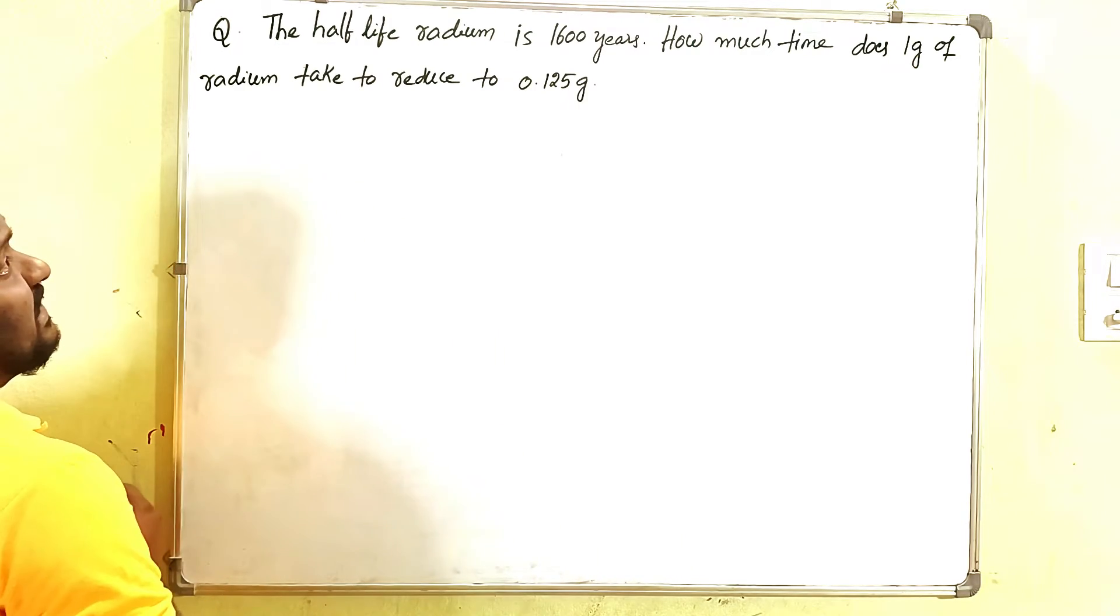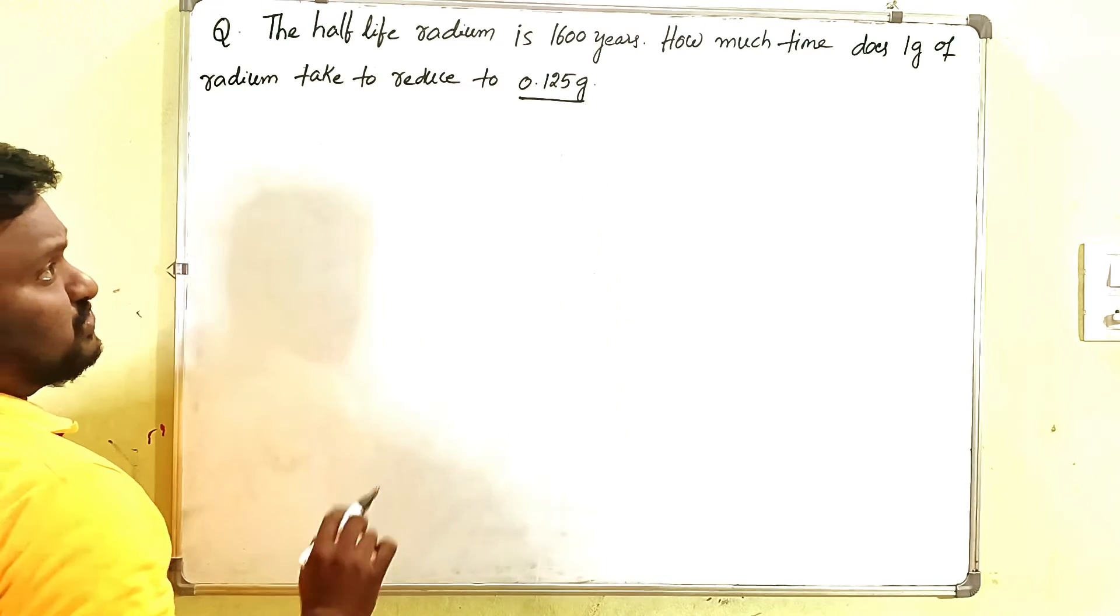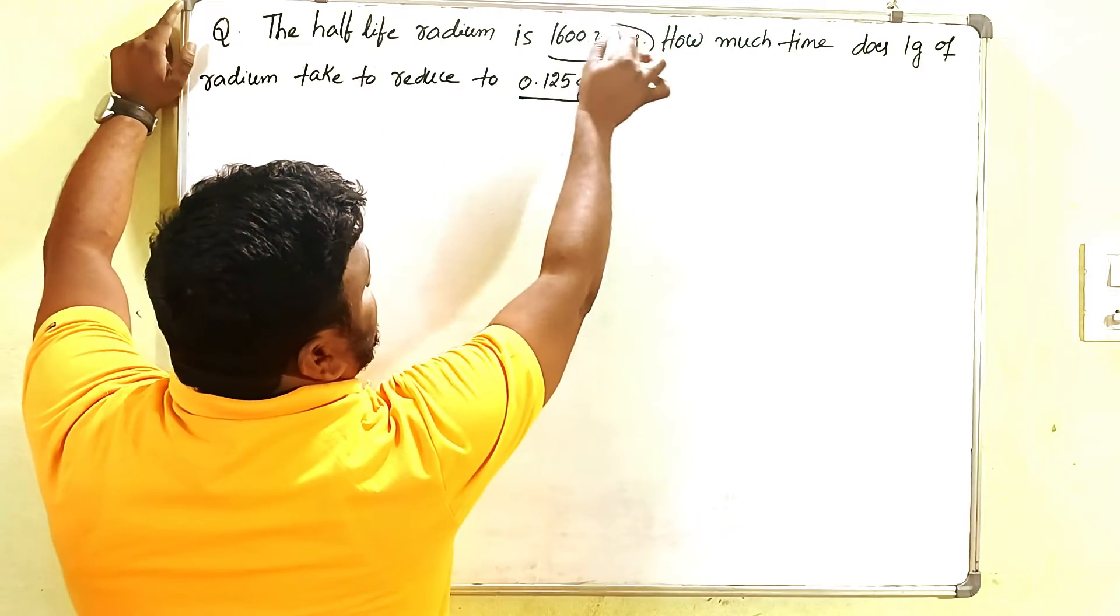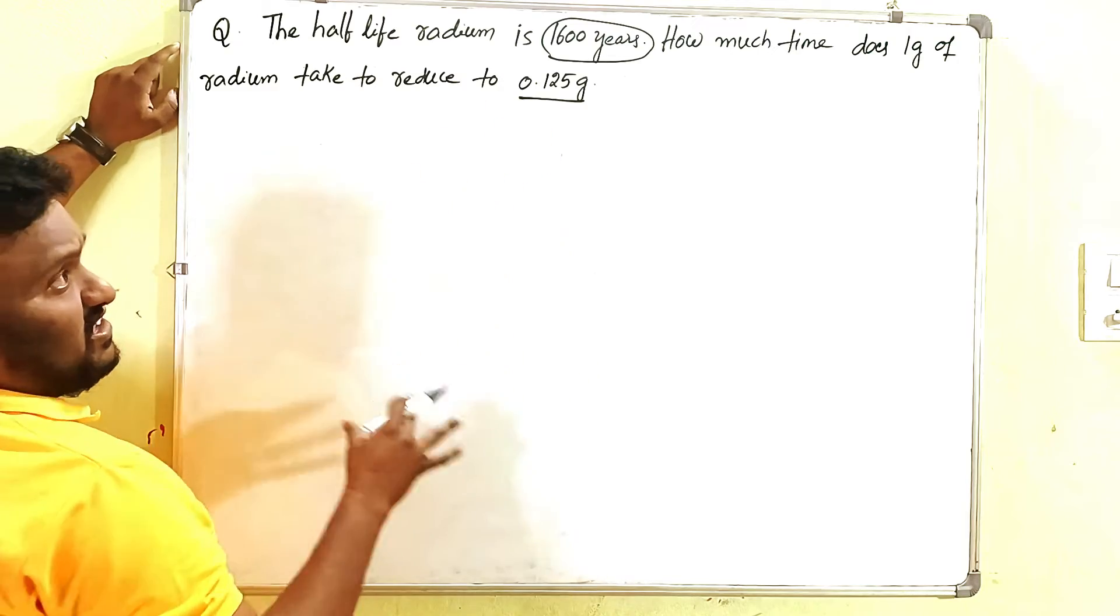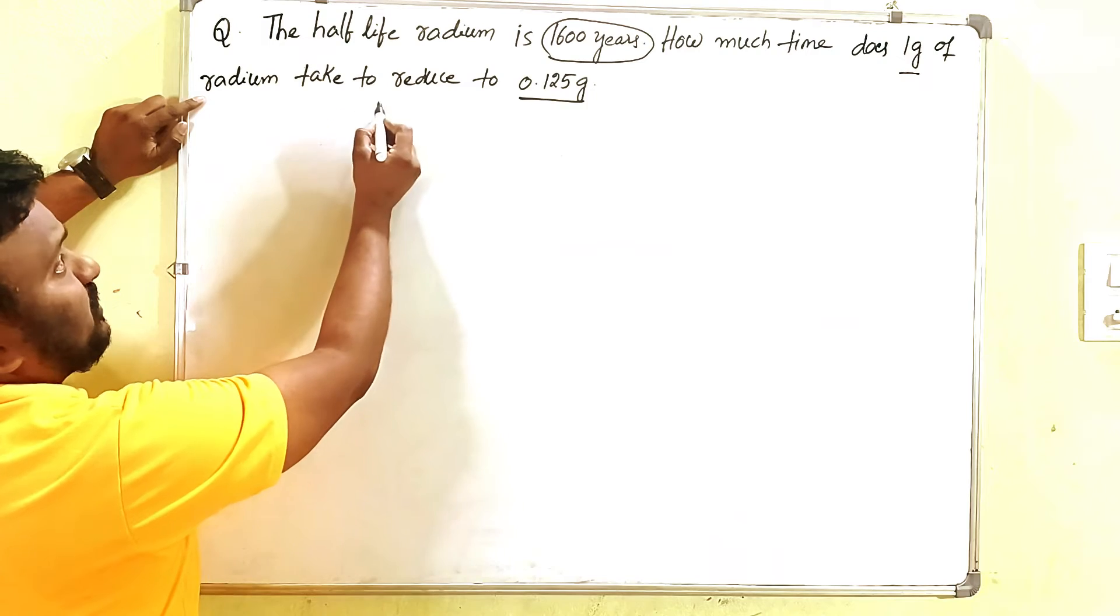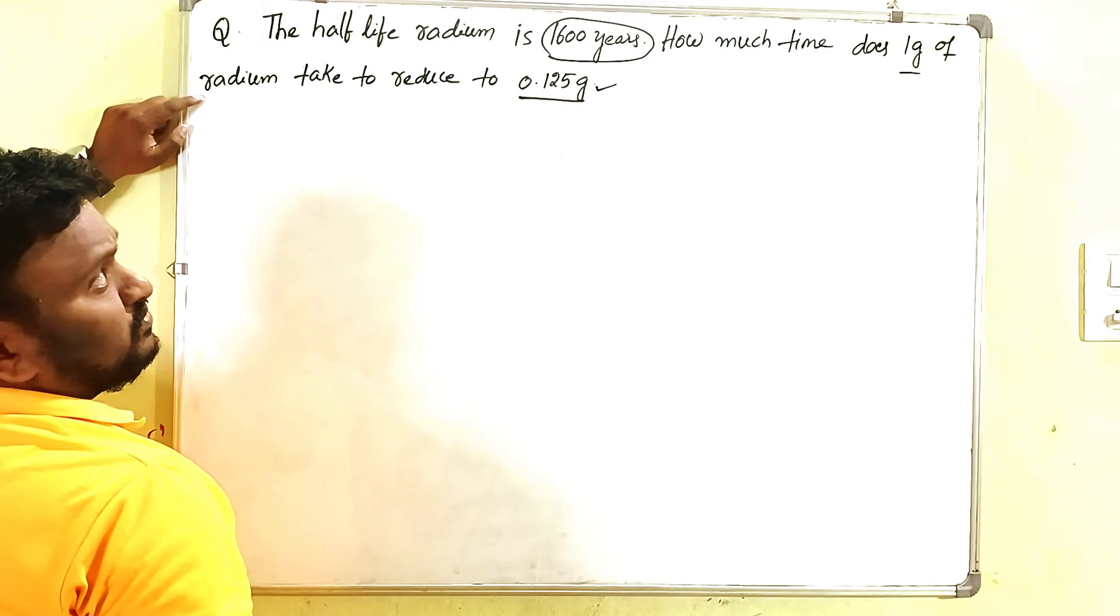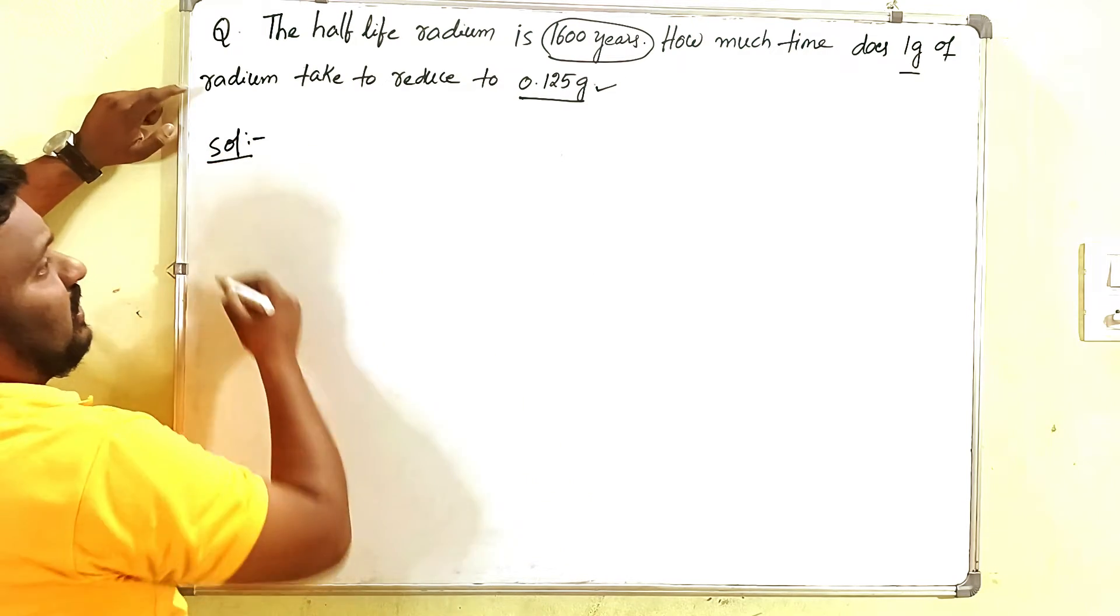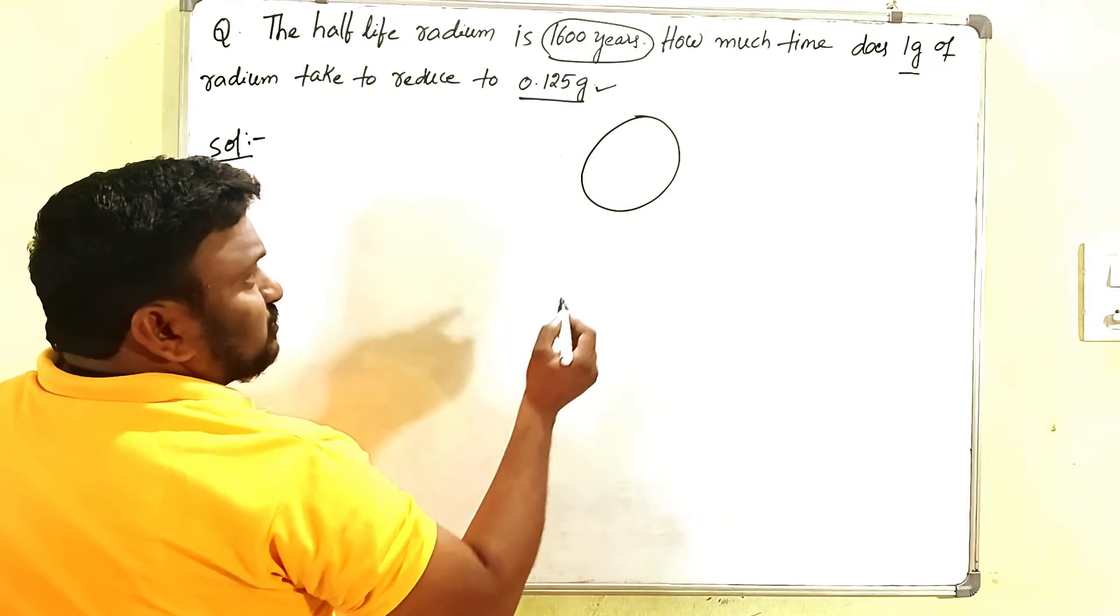The half-life of radium is 1600 years. How much time does one gram of radium take to reduce to 0.125 grams? This is the question. The half-life of radium is 1600 years, and how much time does one gram of radium take to reduce to 0.125 grams?